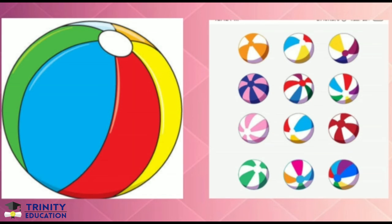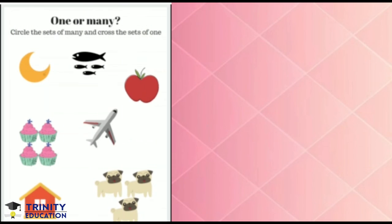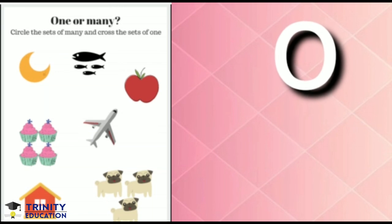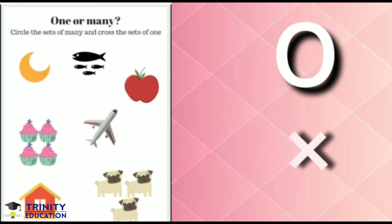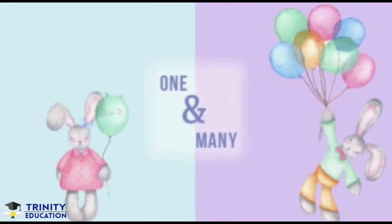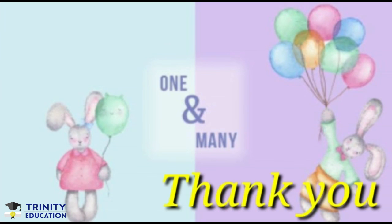For one, we say ball. And for many, we say balls. Here is the worksheet of this concept. In this worksheet, you have to circle the set of many and cross the set of one. I hope you understand this concept of one and many. Thank you so much for watching.